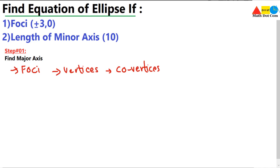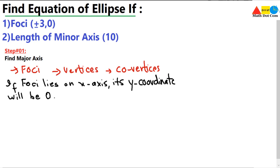In our question, we are given with the foci. Keep in mind that if the foci lies on the x-axis, its y-coordinate will be zero. Let's check the foci we are given — yes, its y-coordinate is zero. It means the foci lies on the x-axis. And if its x-coordinate were zero, it would mean the foci lies on the y-axis. The axis on which the foci lies is actually the major axis.